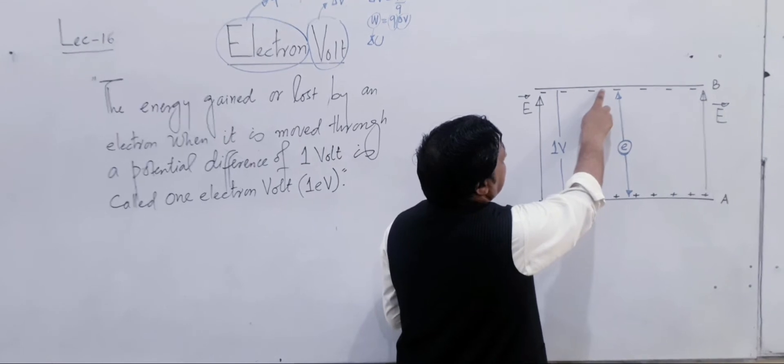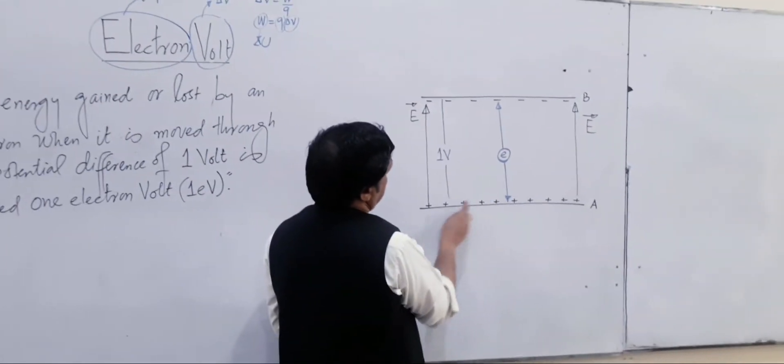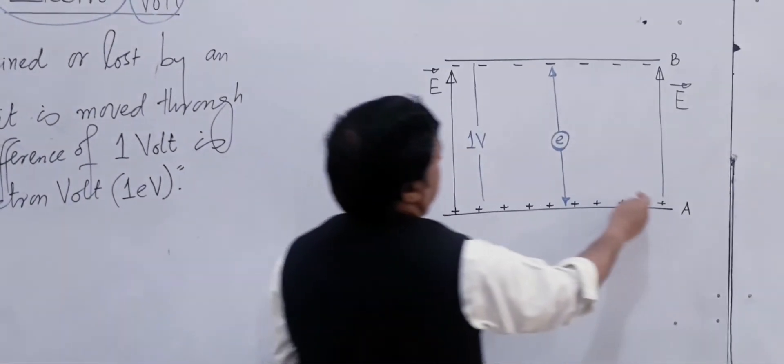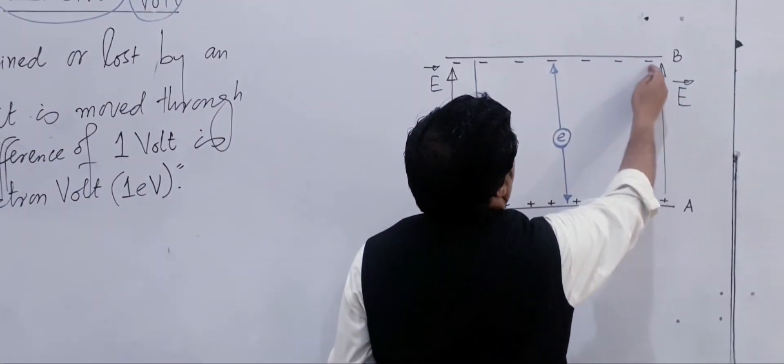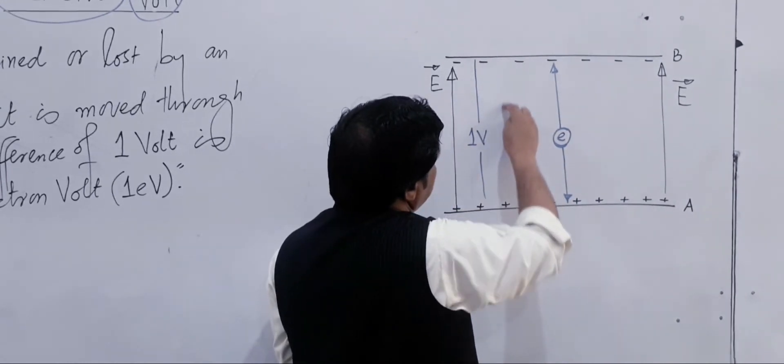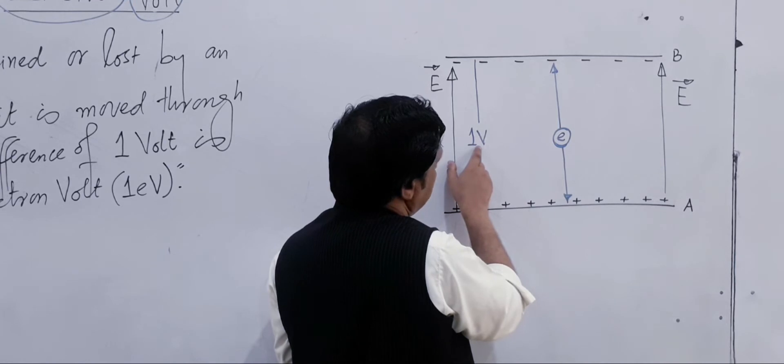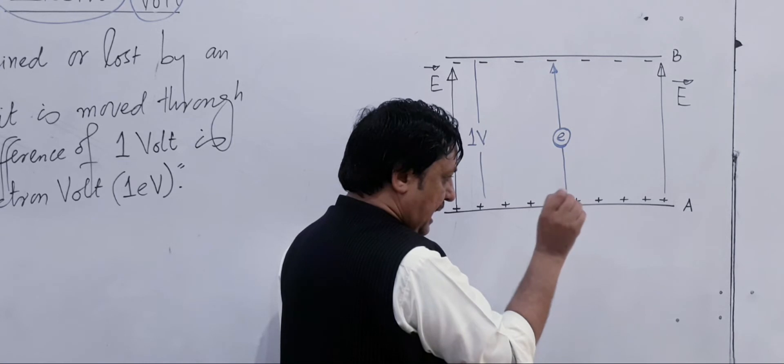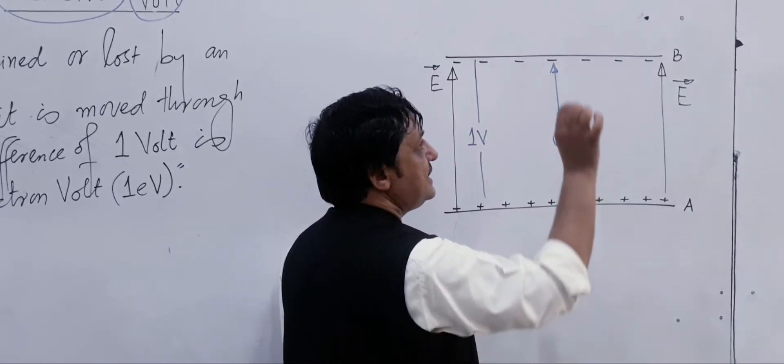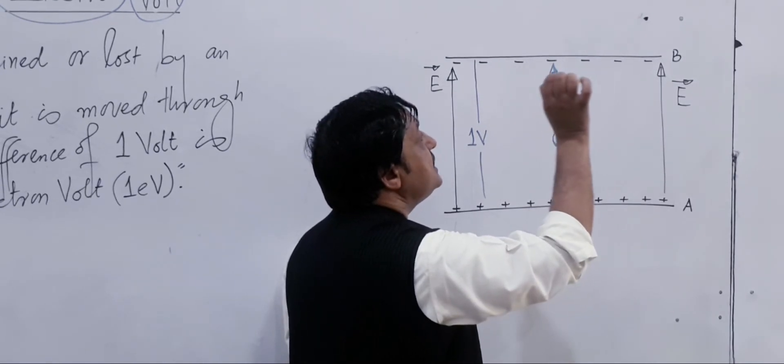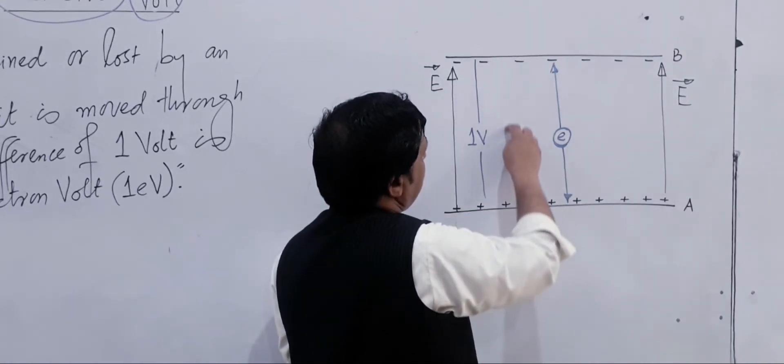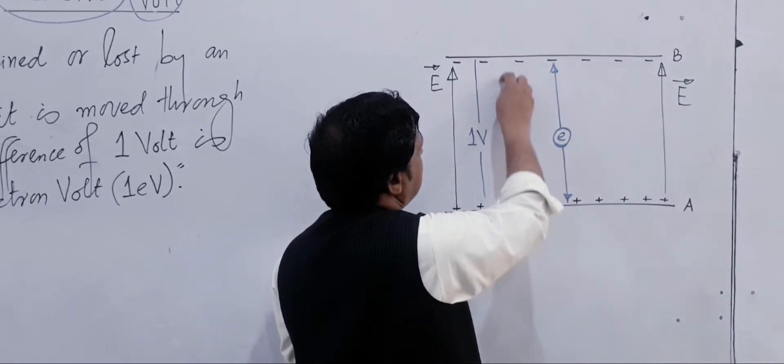This is a negatively charged plate, and this is a positively charged plate. Electric field direction is from positive to negative. If the potential difference between these two plates is 1 volt, which means 1 joule per coulomb, then to displace 1 coulomb charge from one plate to the other, 1 joule energy is required. So the potential difference between these two plates is 1 volt.